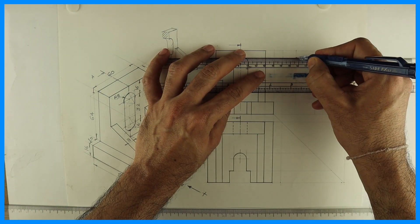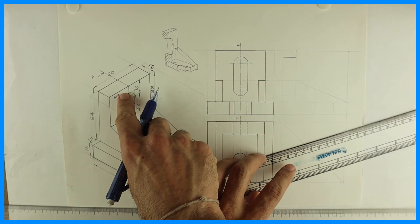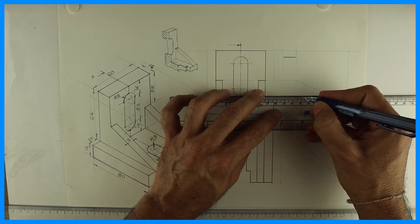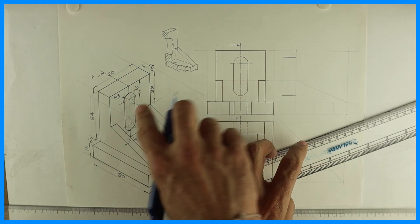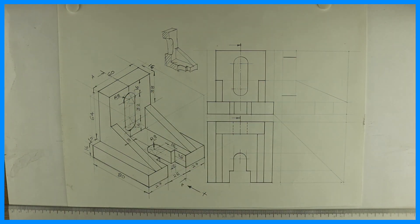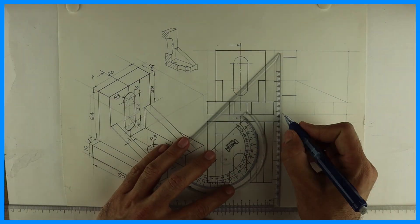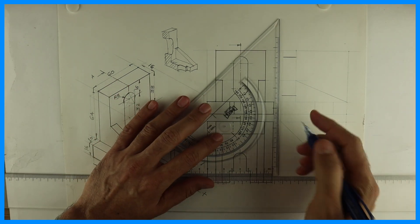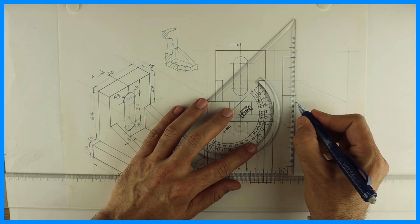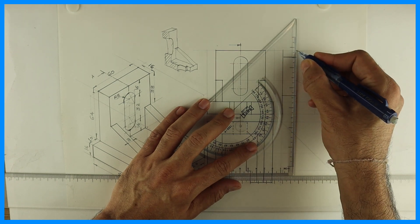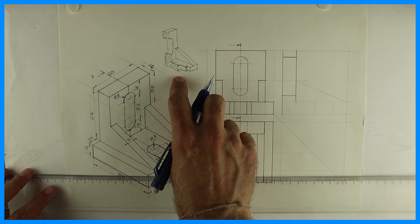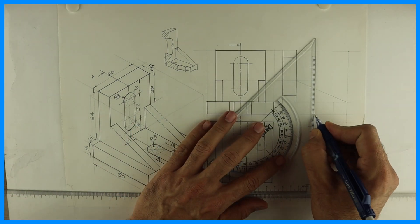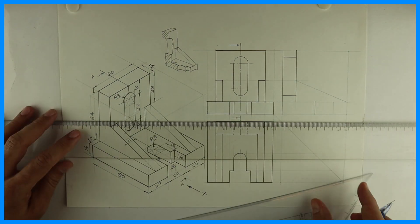This is how it will appear in sectional side view. See, this portion will be dark because when you cut, this is visible. This portion will be dark. So earlier it was dotted, but now it is dark. And this is the cavity which was not seen earlier. Now it is seen. So why we do sectional orthographic? To see in detail. So in this we can see that cavity. See this. Now it is visible. This portion which is getting cut, so that will be dark as well as it will be hatched.